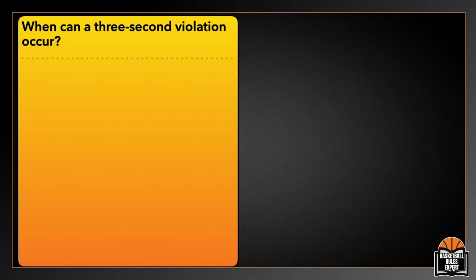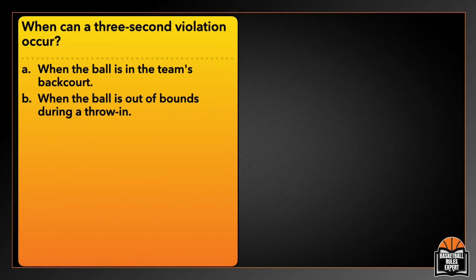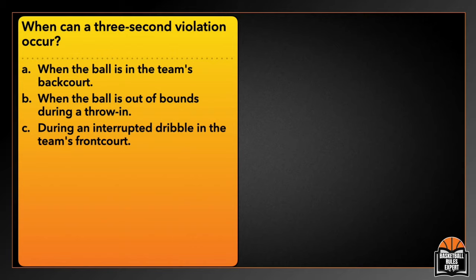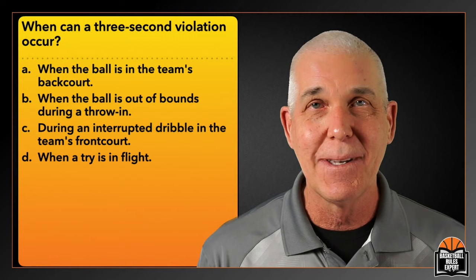When can a three-second violation occur? A — when the ball is in the team's backcourt. B — when the ball is out of bounds during a throw-in. C — during an interrupted dribble in the team's frontcourt. Or D — when a try is in flight. A simple question to get us started today on Basketball Rules Expert.